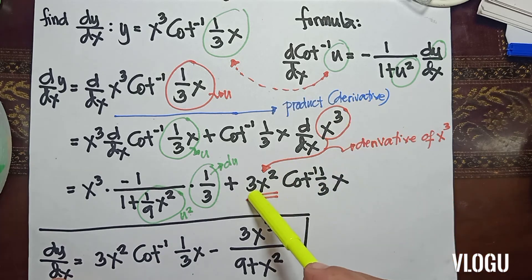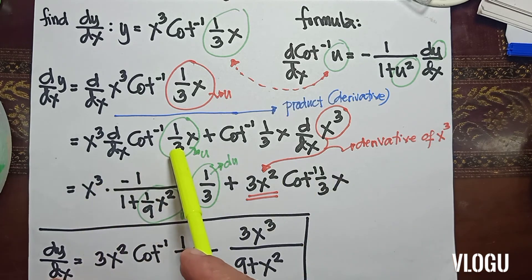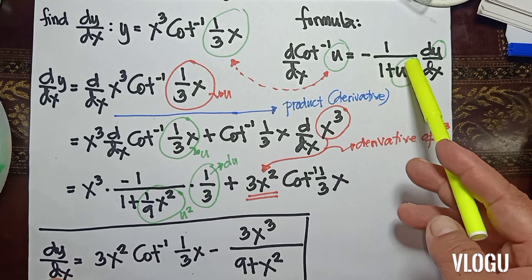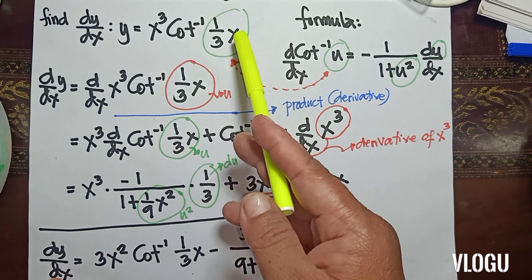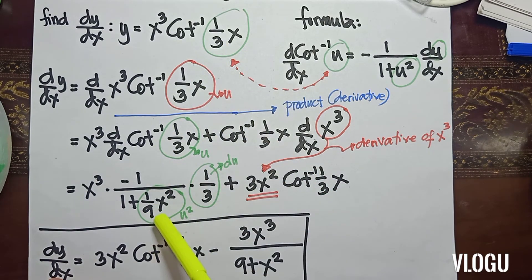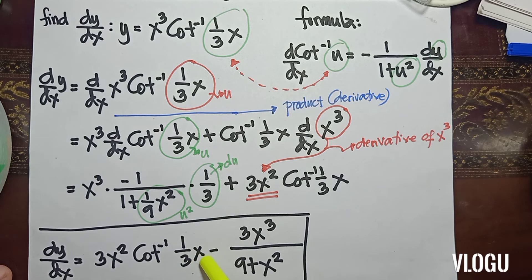The derivative of x cubed is 3x squared. For the derivative of cotangent inverse, following the formula we have negative 1 over 1 plus u squared, where u is (1/3)x. Squaring gives x squared over 9, so the denominator becomes 1 plus (1/9)x squared. Simplifying, we get 3x squared times cotangent inverse (x/3) minus 3x cubed over (9 plus x squared).